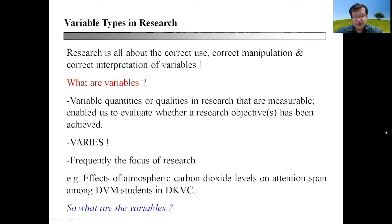For example, we could be looking at effects of atmospheric carbon dioxide levels on attention span among DVM students in DKVC. So what are the variables? The variables here will be atmospheric carbon dioxide levels and attention span among DVM students.